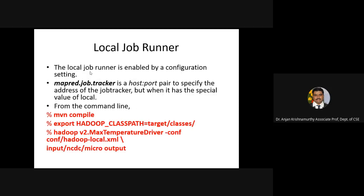The Local Job Runner can be activated using configuration settings — specifically a setting called 'mapred.job.tracker' with a host-to-port pair in that configuration file. For example, 'mvn compile' is there in that file, and 'export HADOOP_CLASSPATH' is set accordingly. You can change the driver configuration to a local XML file, specifying input as 'ncdc/micro' and output accordingly, which turns the entire execution from a Hadoop cluster run into a simple run on the local machine.